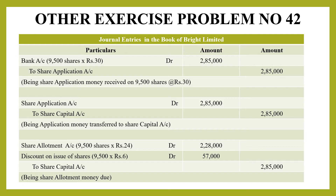For share allotment: 9,500 shares at 24 rupees we have to receive, that is 2,28,000 rupees. Plus the 6% discount is also reflected at allotment — whether premium or discount, it is shown at allotment time. The discount on issue of shares is debited, and the amount that should be inside the business but isn't collected is 57,000 rupees.